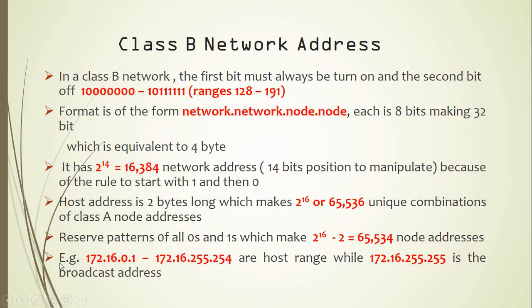For a class B network address, the first bit must always be on and the second bit must be off. Converting this binary to decimal gives 128. Recall that class A goes from 0 to 127, so class B starts from 128 up to 191. So if you see an address like 172, it is a class B network address. The format is network.network.node.node — the first 16 bits are the network path and the remaining 16 bits are the node path.